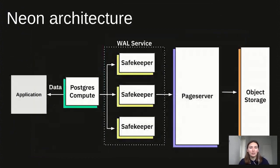Let's have a quick look at the Neon architecture so we're on the same page. Your application first connects to Postgres Compute, which is essentially normal Postgres backed by Neon storage. Compute streams all data changes to the WAL service, which is responsible for durability of recent updates. This WAL is then passed to the page server, processed there, and uploaded to cloud S3 storage. There are many moving parts in the system, but we only use for billing those consumption metrics which end users can control.